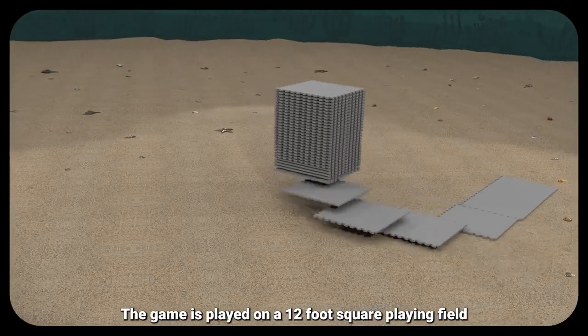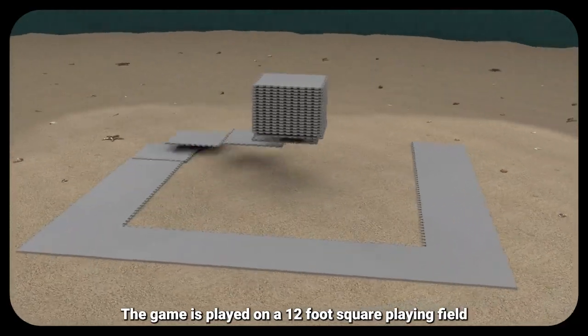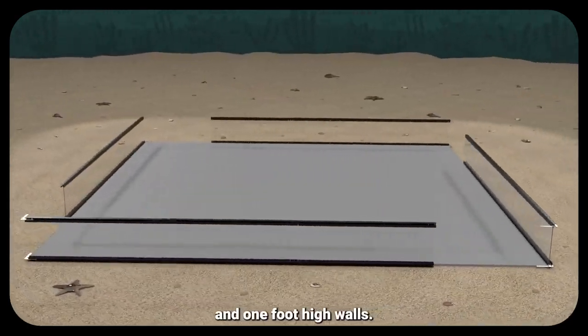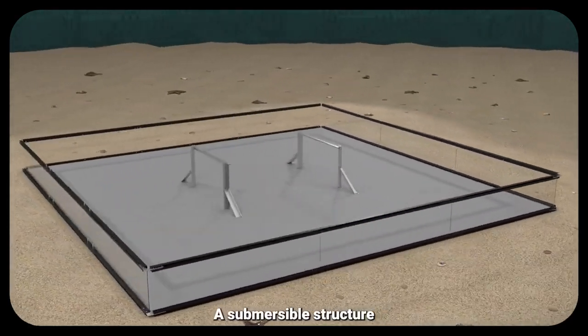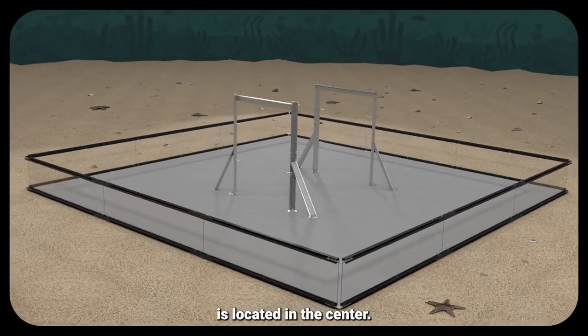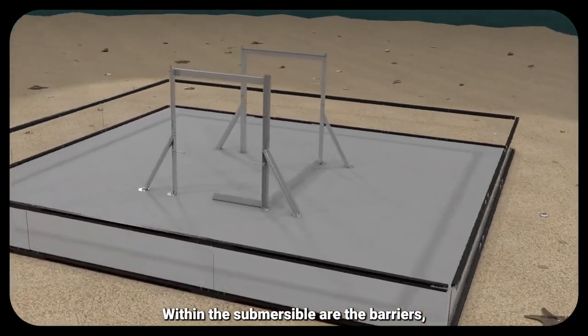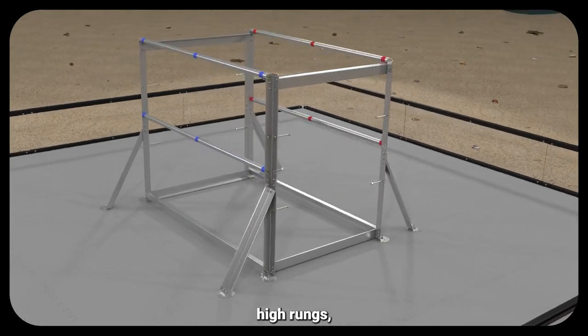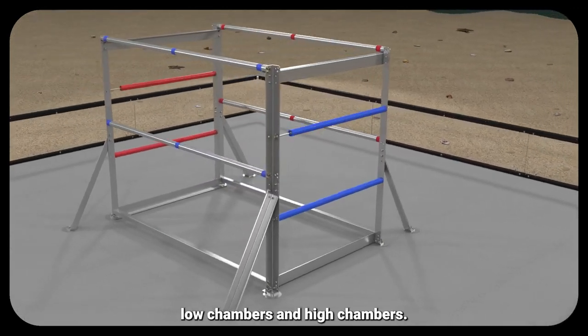The game is played on a 12-foot square playing field with a foam tile floor and one-foot-high walls. A submersible structure is located in the center. Within the submersible are the barriers, low rungs, high rungs, low chambers, and high chambers.